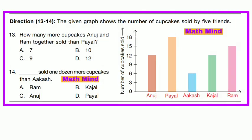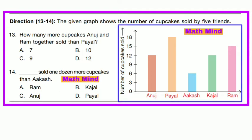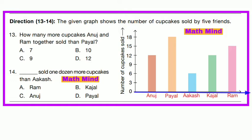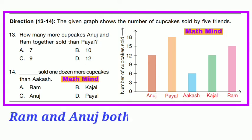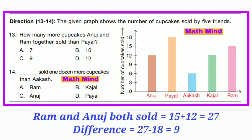Questions 13 and 14 refer to a graph showing cupcakes sold by 5 friends. Horizontal line shows names, vertical line shows number of cupcakes. Question No. 13: How many more cupcakes did Anju and Ram together sell than Payal? Anju sold 12, Ram sold 15, together 27. Payal sold 18. Difference = 27 − 18 = 9. Option C is correct.